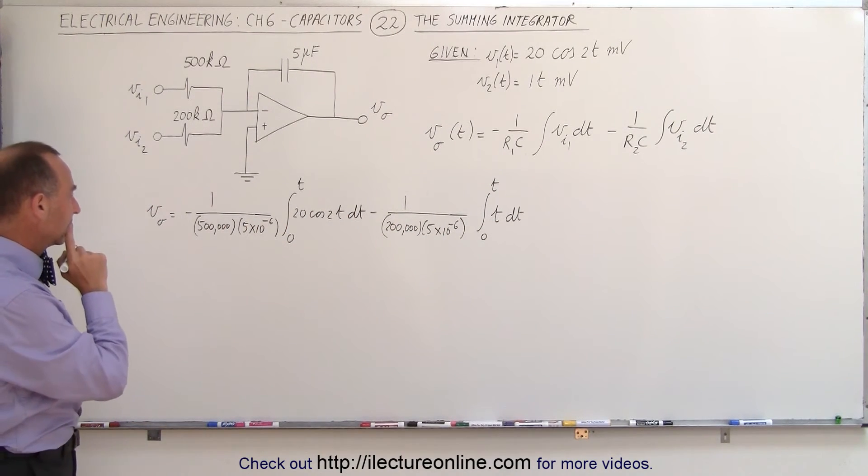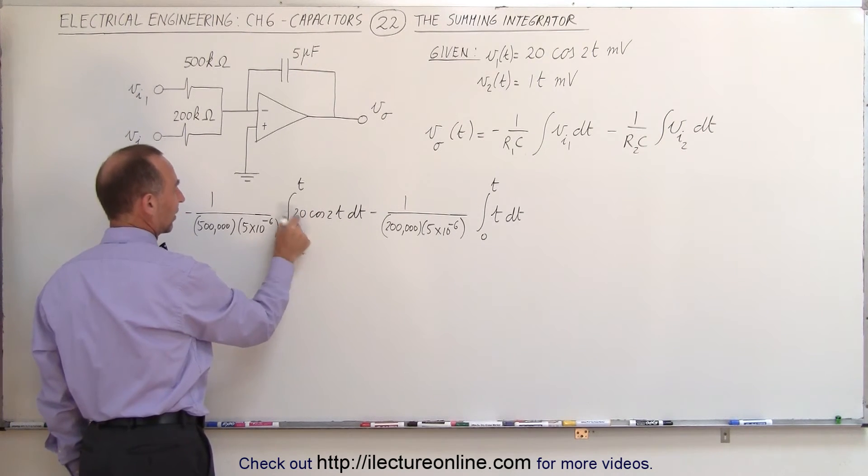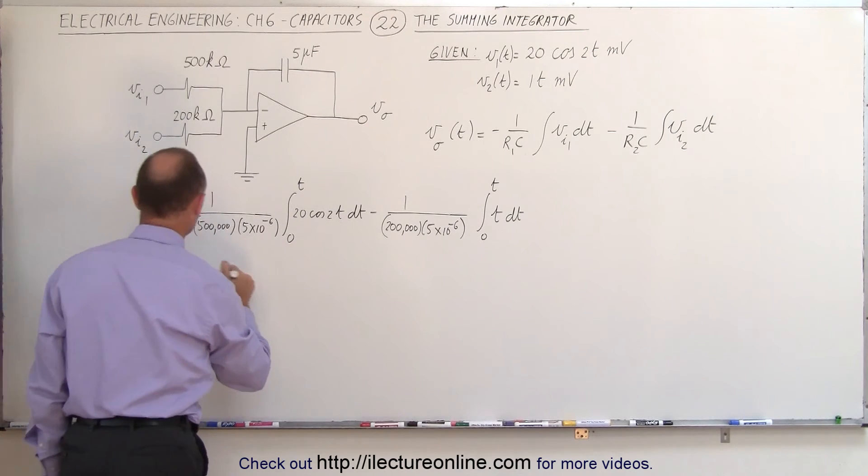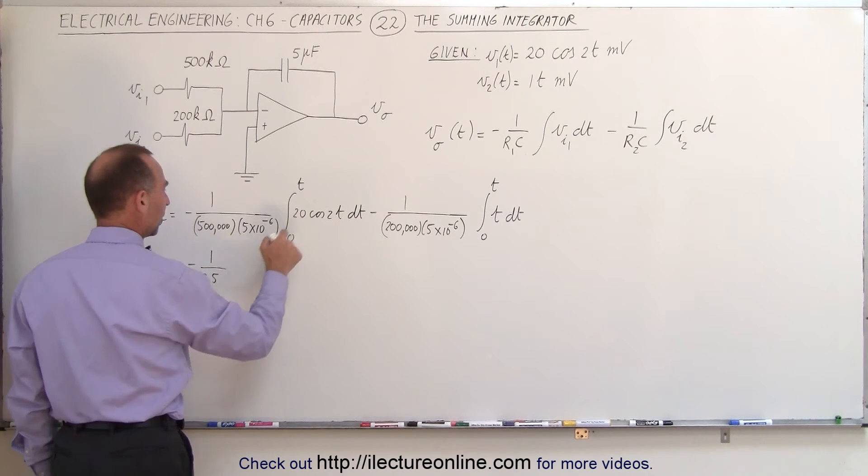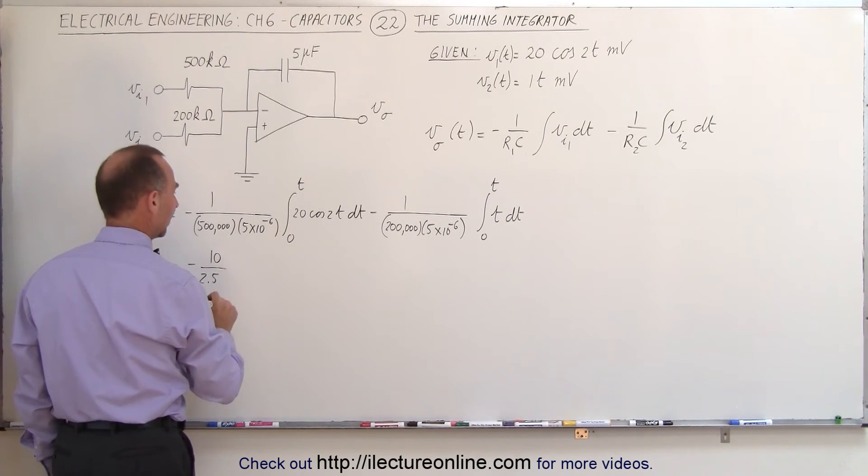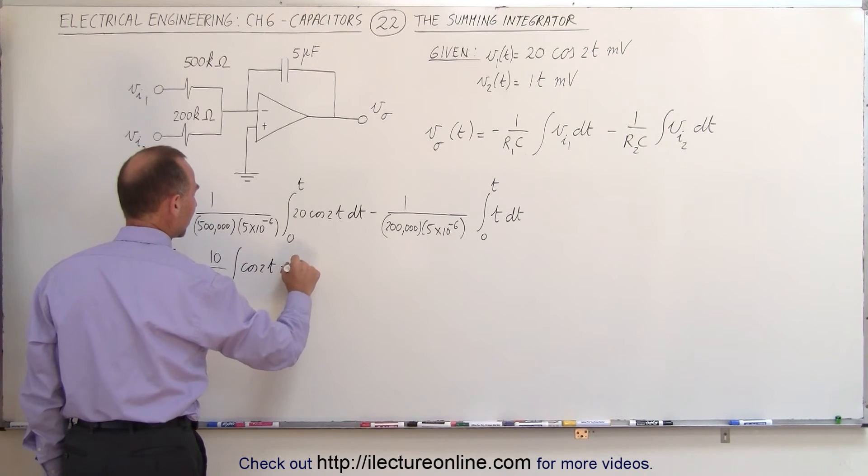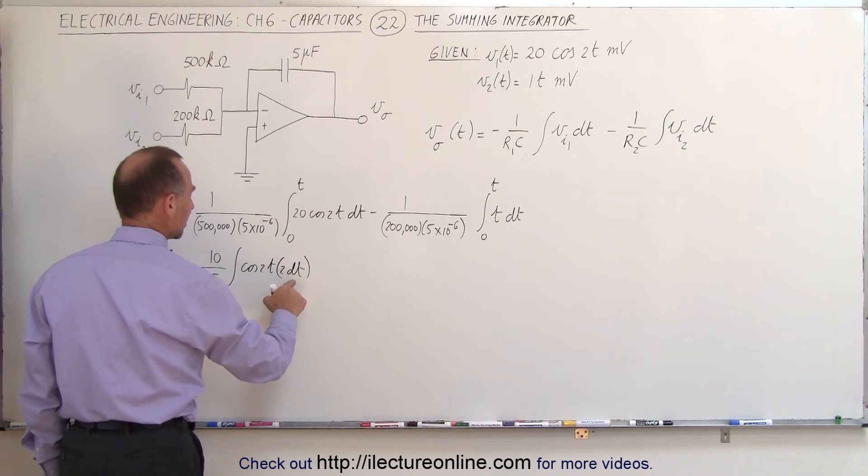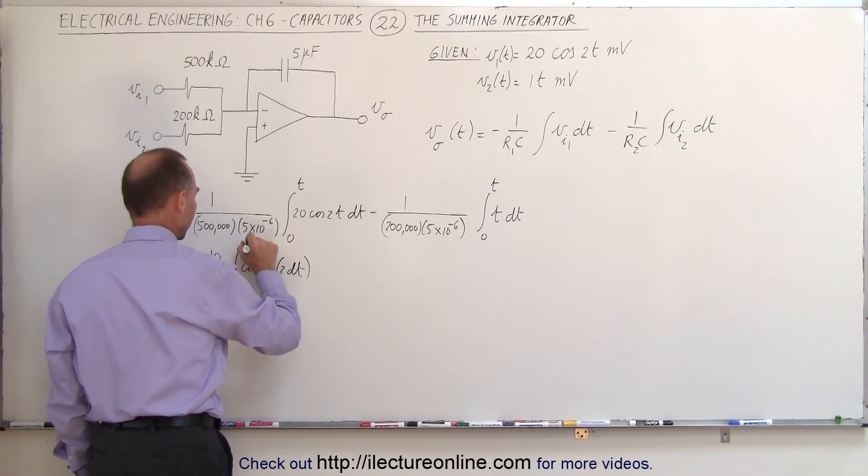All right, let's see here. What we need, we need a 2dt so we can integrate that, so we're going to put the 10 over here and the 2 over there. So this is equal to minus 1 over 2.5, multiply this times 10, times the integral of the cosine of 2t times 2dt, so there's the differential of the function from 0 to t,